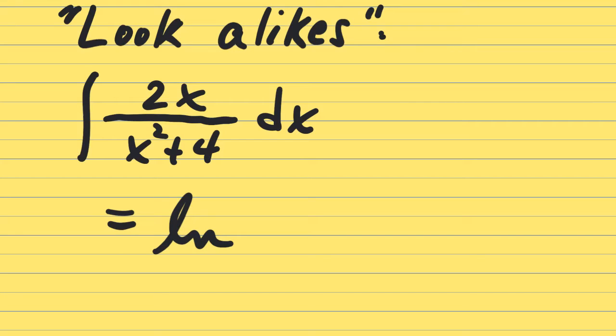Since x squared plus 4 isn't negative, in fact if you were to graph it, the parabola never hits the x-axis or goes below it. You don't have to use absolute values even though it's still correct. But anyway, the antiderivative is natural log of your denominator. Fair enough.